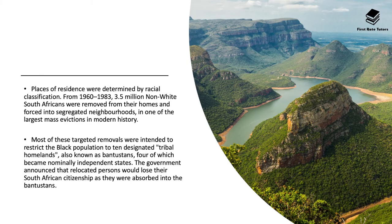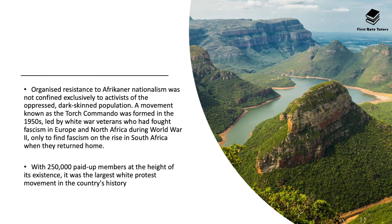Places of residence were also determined by racial classification. Between 1960 and 1983, 3.5 million non-white South Africans were removed from their homes and forced into segregated neighbourhoods in one of the largest mass evictions in modern history. Most of these targeted removals were intended to restrict the black population to 10 designated tribal homelands known as Bantustans, four of which became nominally independent states. The government announced that relocated persons would lose their South African citizenship as they were absorbed into the Bantustans.